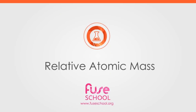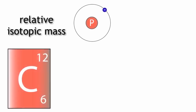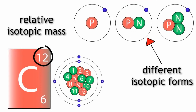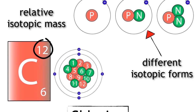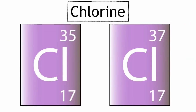The relative isotopic mass is the mass of an element in relation to carbon-12. The reason that this is the isotopic mass is because some elements have different isotopic forms. For example, chlorine can be found as chlorine-35 and chlorine-37.